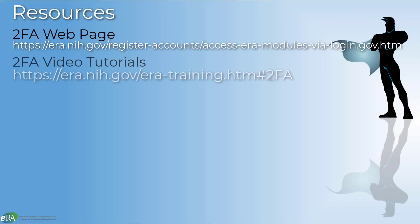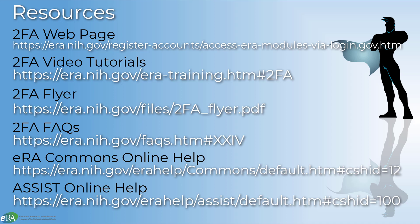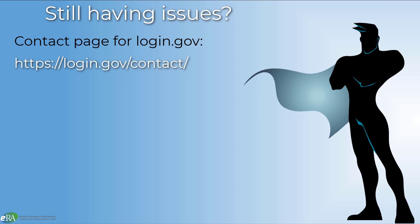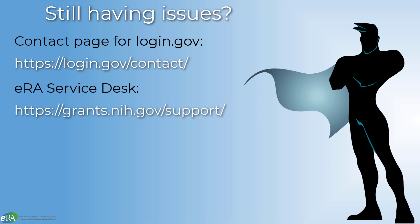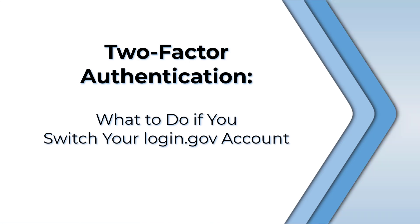There are a variety of resources available to you should you need help with managing your login.gov account and associating it with your eRA Commons account. If you are still having issues using login.gov to authenticate to eRA Commons, visit the login.gov contact page. For issues related to your eRA account or to associating your login.gov account with your eRA account, contact the eRA Service Desk. This concludes the tutorial on switching your login.gov account used to authenticate to an eRA module. Thank you for watching.